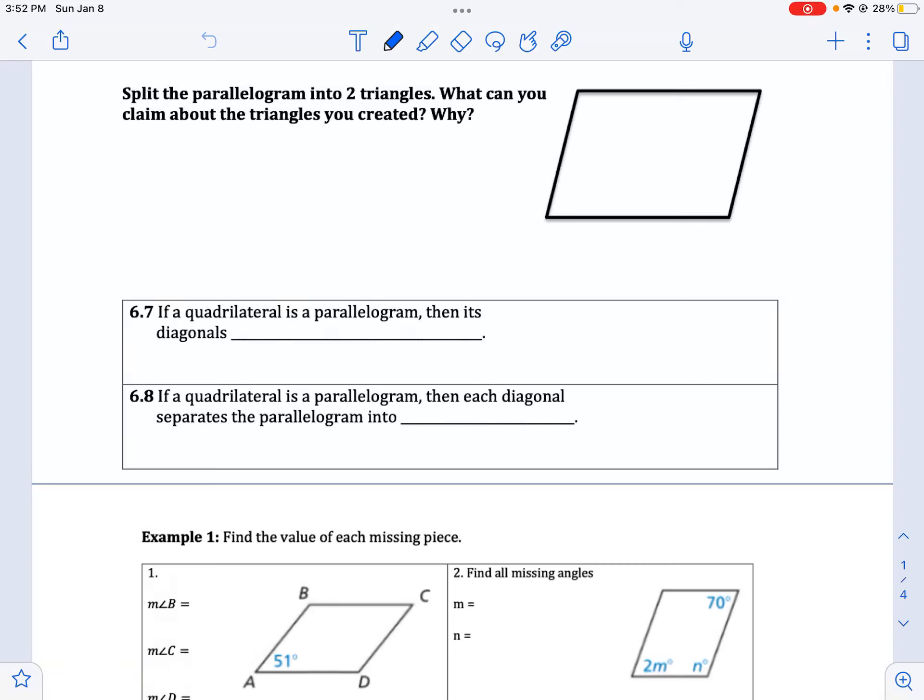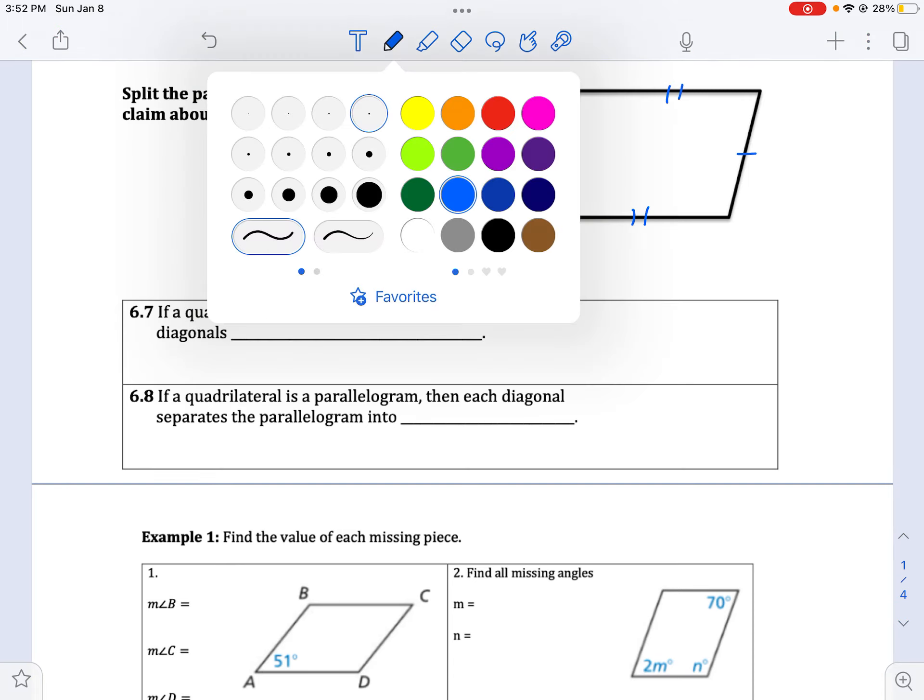All right, quick reminder on our parallelograms. Opposite sides are congruent, opposite angles are congruent, consecutive angles add to 180.